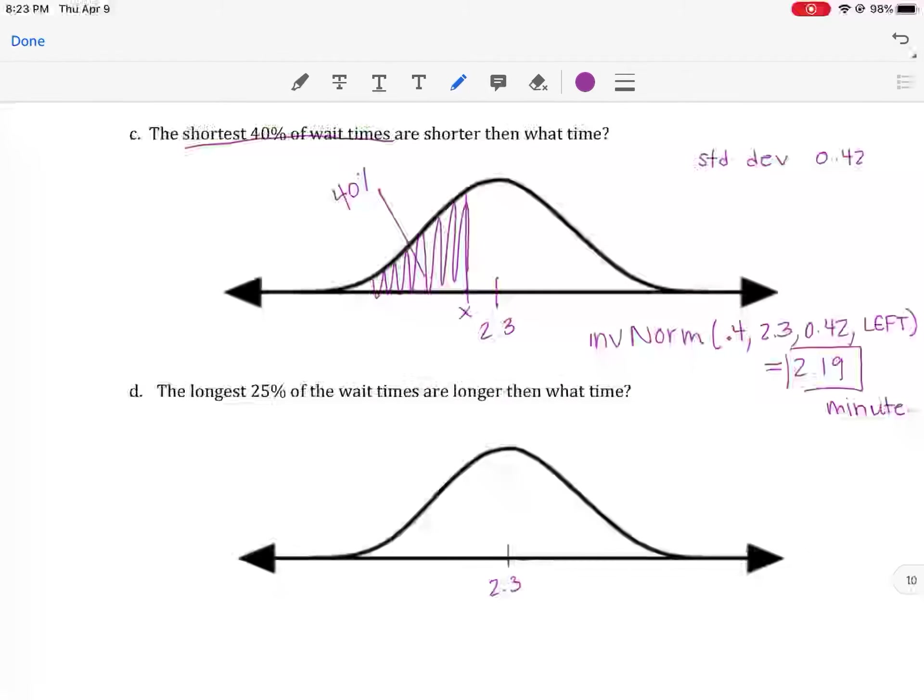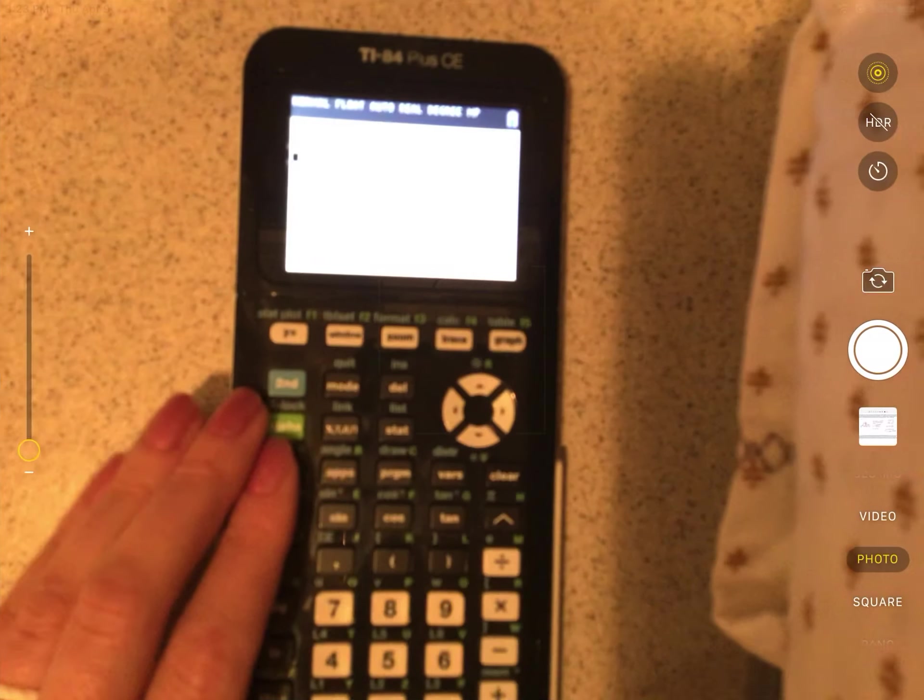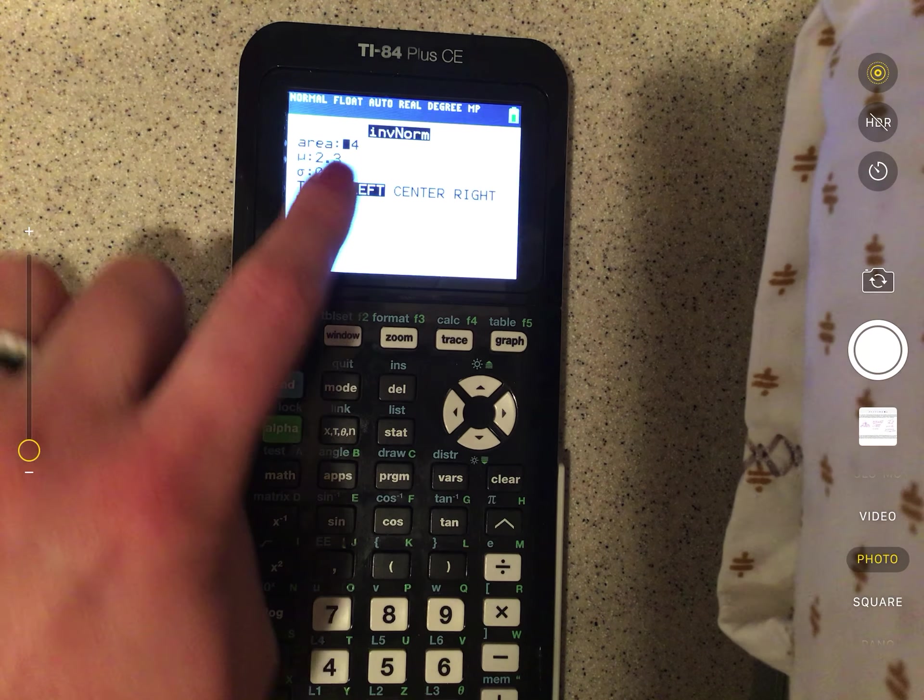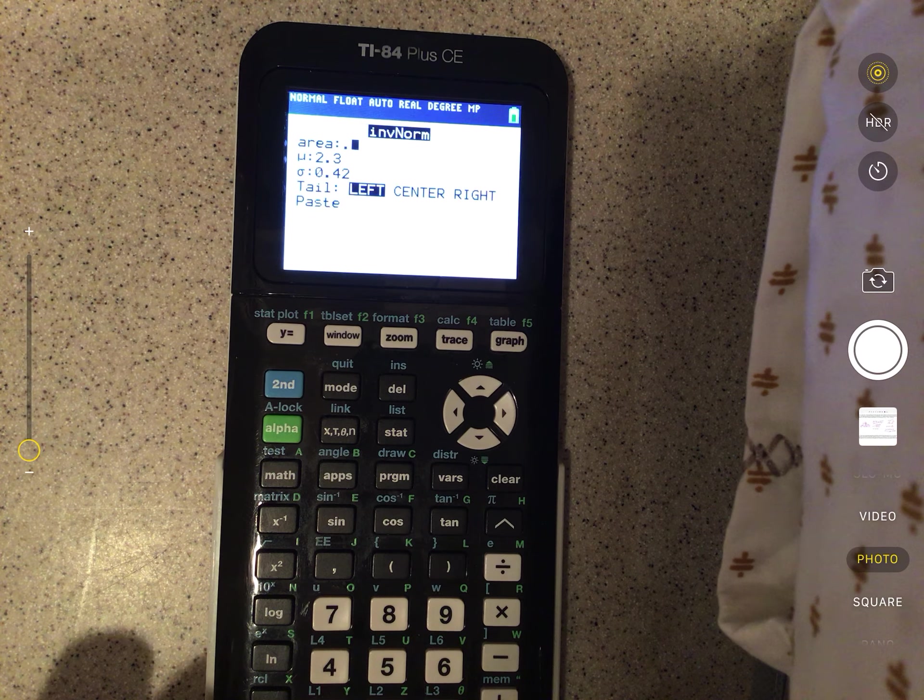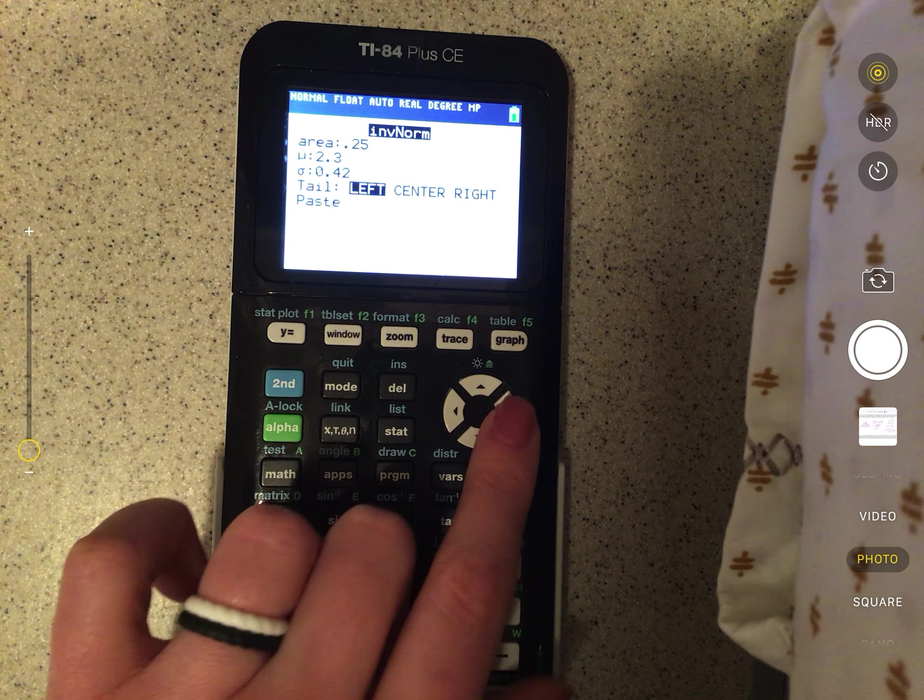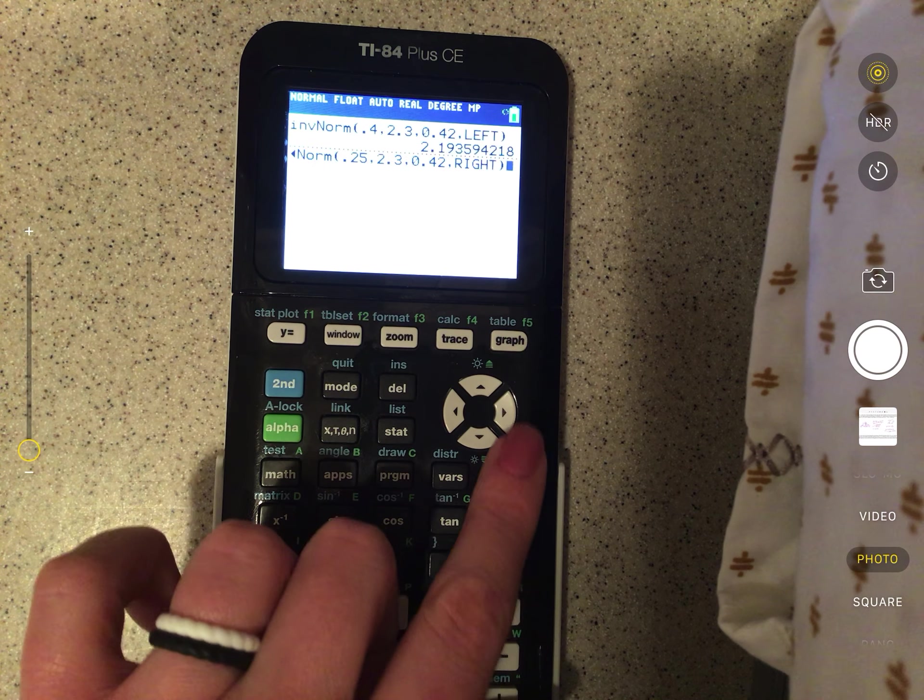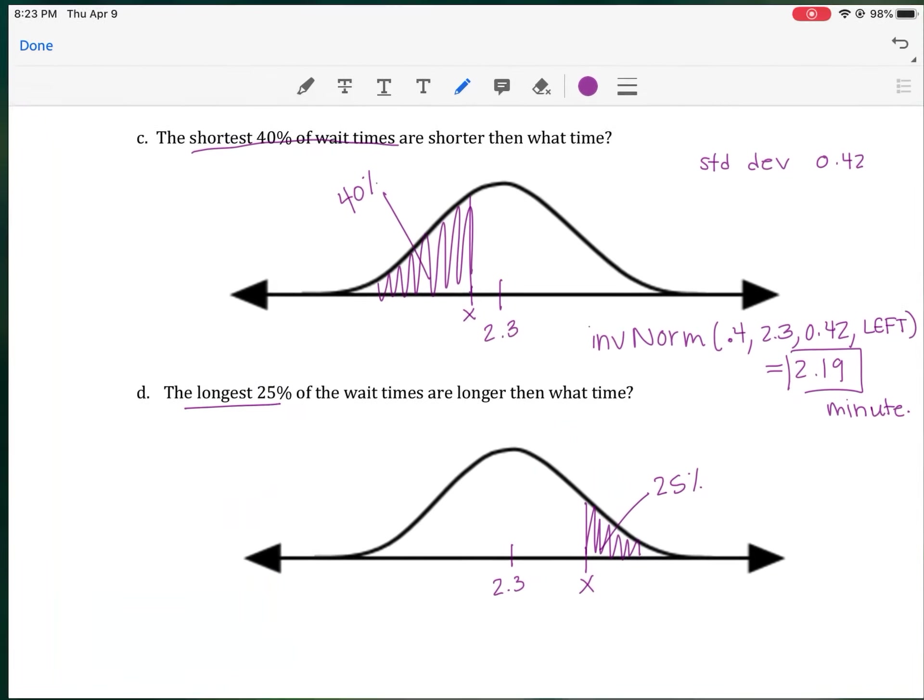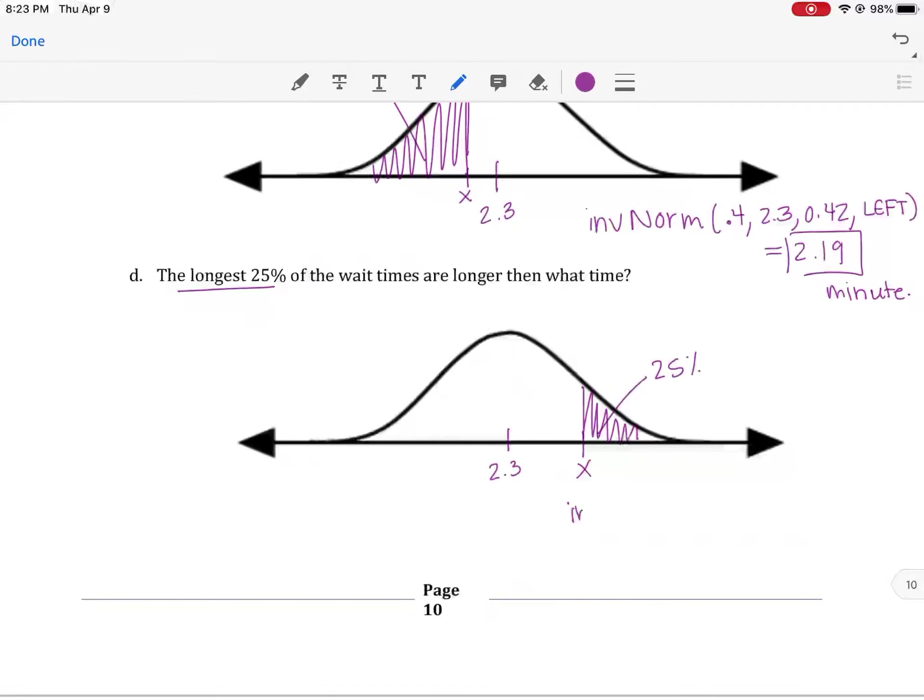Same problem here. We still have 2.3 as our mean. But the longest 25% of wait times. Notice once again, if they're given a percent, the longest, this time it's going to be on the right. But this area is 25%. Tell me what this cutoff is. So let's flip back to the calculator. We're going to hit second VARs, go down to number 3 for inverse normal. The area is 0.25, the mean and standard deviation hasn't changed. And this time, since we want the longest, we're going to go to the right. We're going to paste and hit enter again. And we get 2.58 minutes this time.